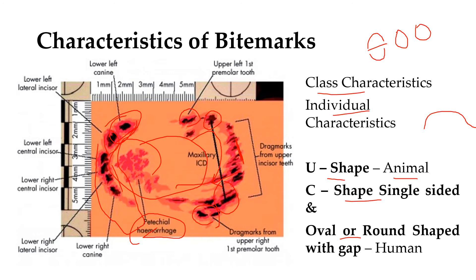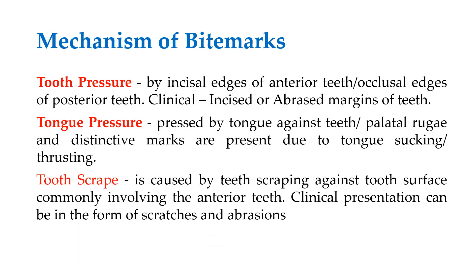Petechial hemorrhages are due to the suction and reverse pressure of the mouth toward the palatal rugose surface and the tongue. These suction marks are common in love bites. The mechanism of bite marks involves three types: tooth pressure, where the incisal edges of anterior teeth and occlusal edges of posterior teeth are involved.